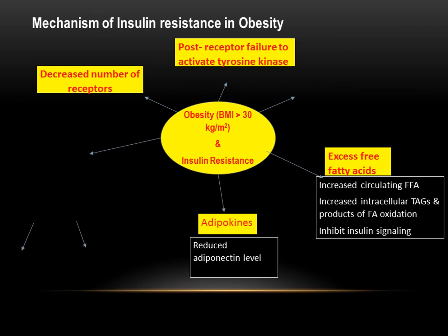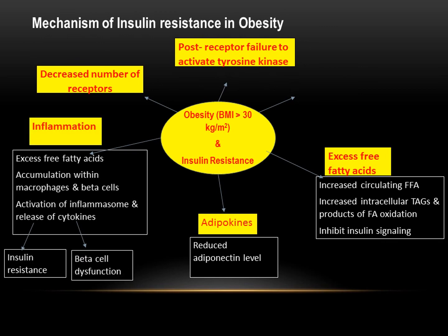Adipocytes secrete intestinal hormones including GLP-1, GIP, and adiponectin, which stimulate the pancreas to increase insulin secretion. However, inflammation — driven by macrophages acting on beta cells and releasing cytokines via the inflammasome — causes insulin resistance and beta cell dysfunction.